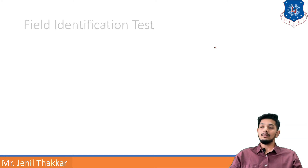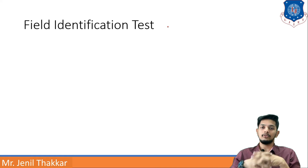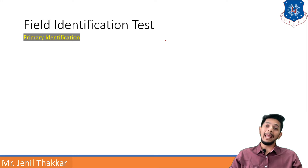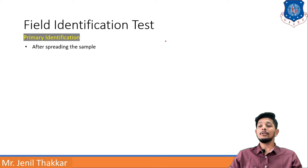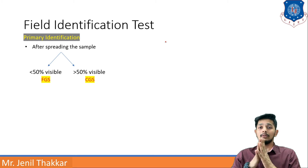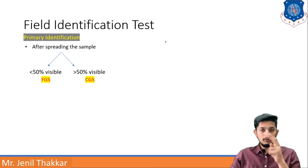Next, we need to learn field identification tests. When you go on the field, you do not have machines, so you have to identify the soil with your eyes and senses only. For primary identification, after spreading the sample, you observe it with naked eyes. If less than 50% of soil particles are visible, it is a fine-grained soil (FGS). If more than 50% are visible, it is a coarse-grained soil (CGS).